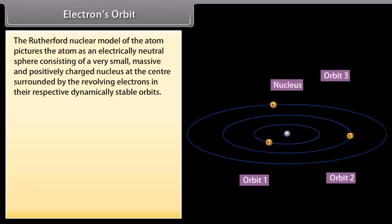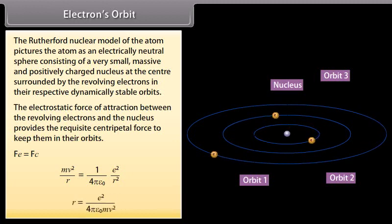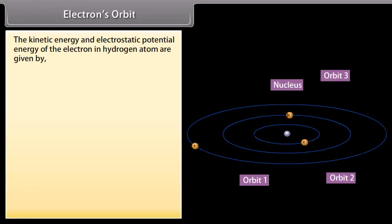Electrons orbit. The Rutherford nuclear model of the atom pictures the atom as an electrically neutral sphere consisting of a very small, massive, and positively charged nucleus at the center surrounded by the revolving electrons in their respective dynamically stable orbits. The electrostatic force of attraction between the revolving electrons and the nucleus provides the requisite centripetal force to keep them in their orbits. F_e = F_c. Putting their respective values, we get mv²/r = (1/4πε₀)(e²/r²). We can also write this equation as r = e²/(4πε₀mv²).